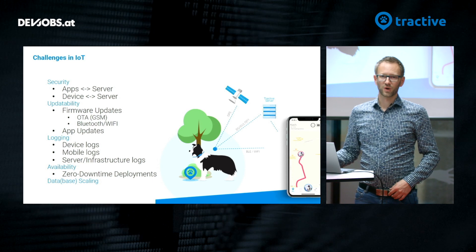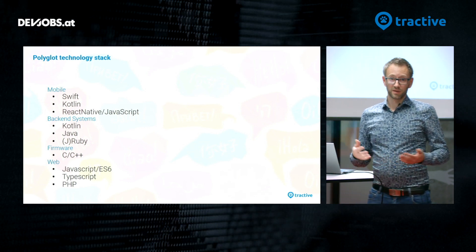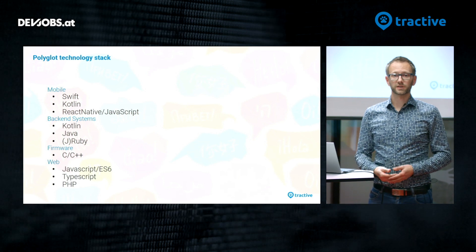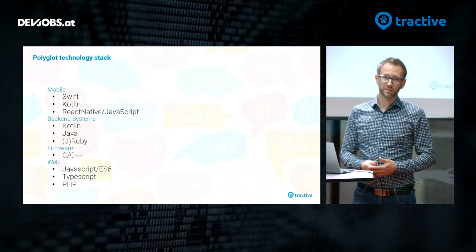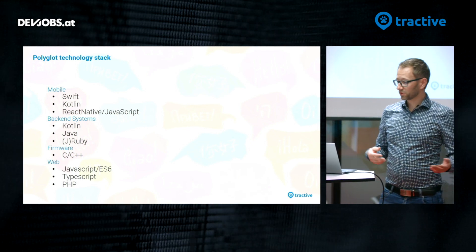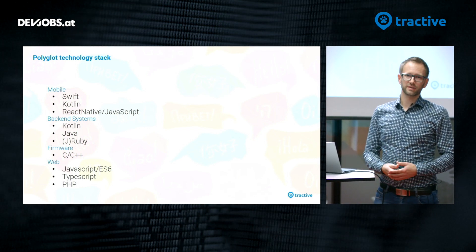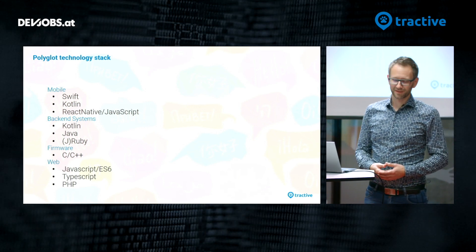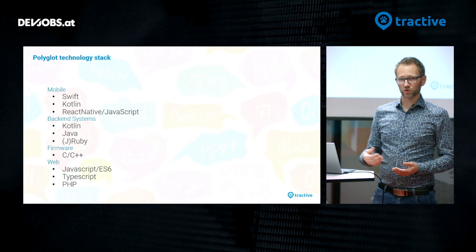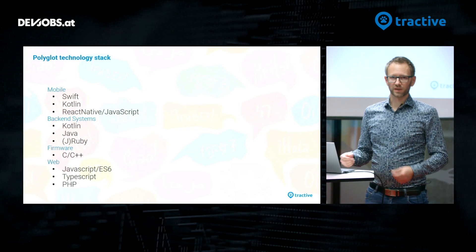Today we would like to focus on the aspect of logging. Why is logging such a big topic? There are various sources. We have apps based on Swift and Kotlin, and they have integrated React Native and JavaScript parts in the application. There are backend systems written in Kotlin, Ruby, JRuby, and Java. The firmware development team also creates quite a lot of logs — they write their stuff in C and C++. And then all the web applications, websites, and web shop, written in various web frameworks, also create logs that we want to aggregate on the server side.